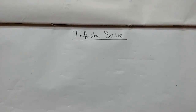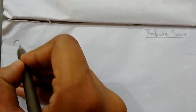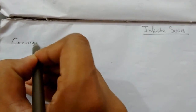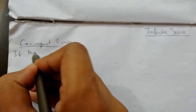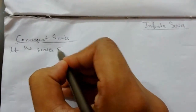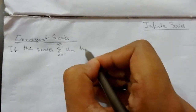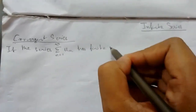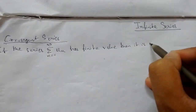Welcome back. Today we'll be continuing with infinite series, and we'll be discussing types of series. First is convergent series. If the series — that is, summation n from 1 to infinity of u(n) — has a finite value, then it is called a convergent series.